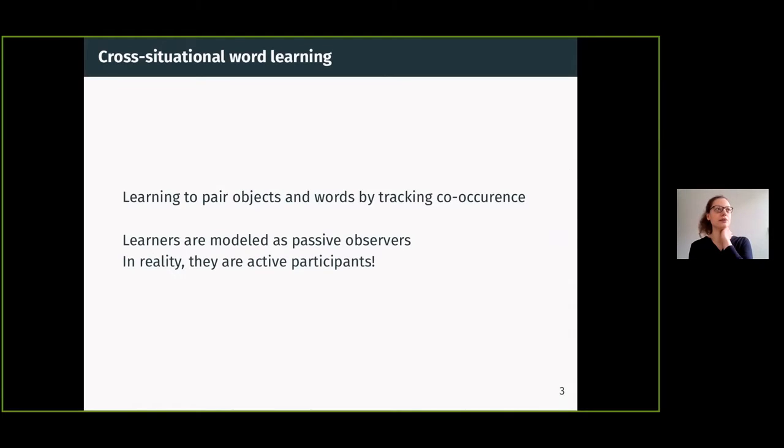In cognitive science, one of the areas that's studied a lot is which words map to which objects in the environment. This is very important to be able to talk about things in the world—you need to know the correct label for objects.